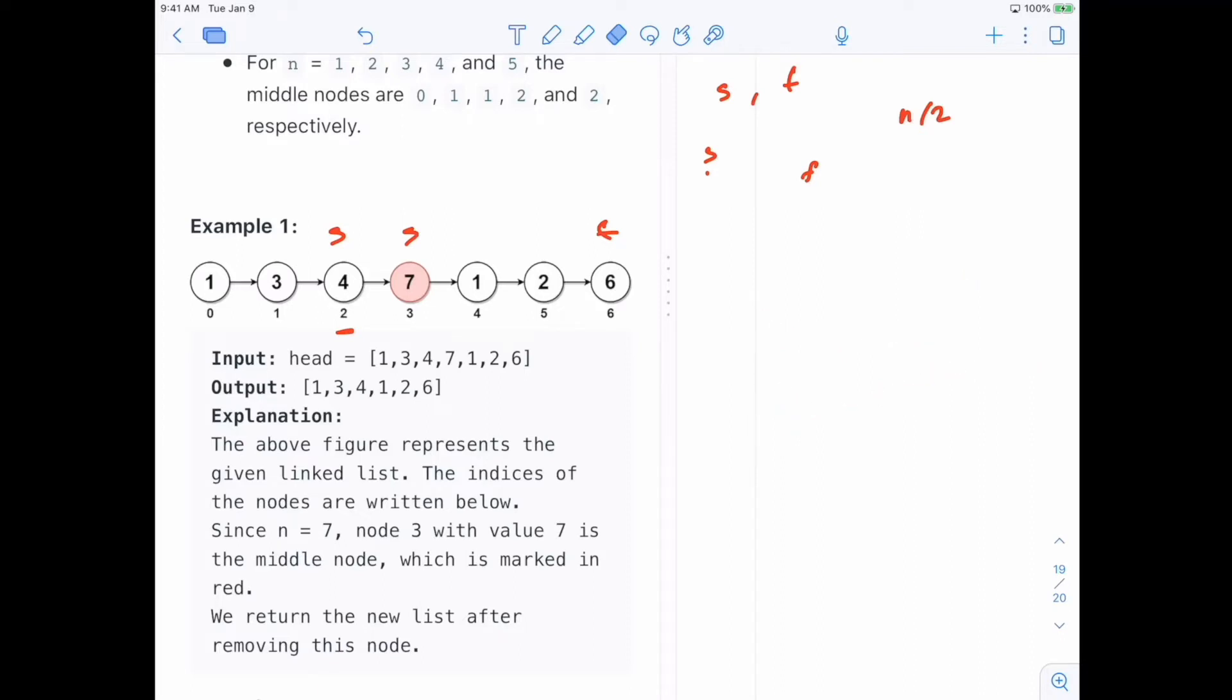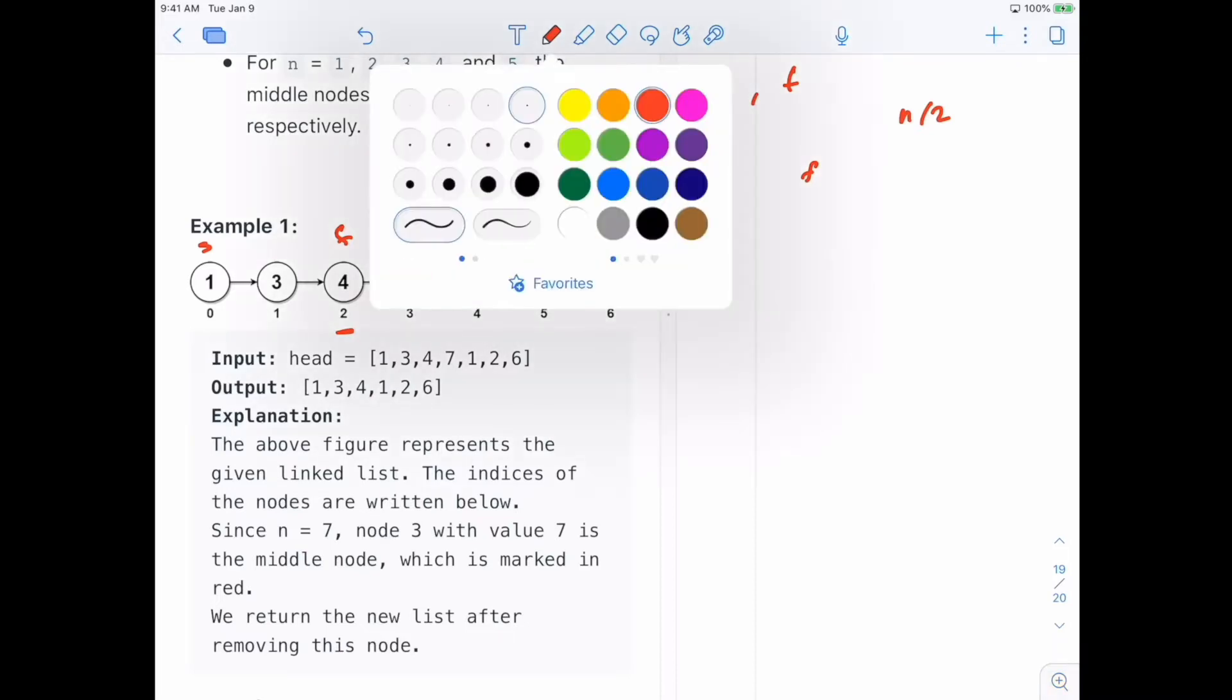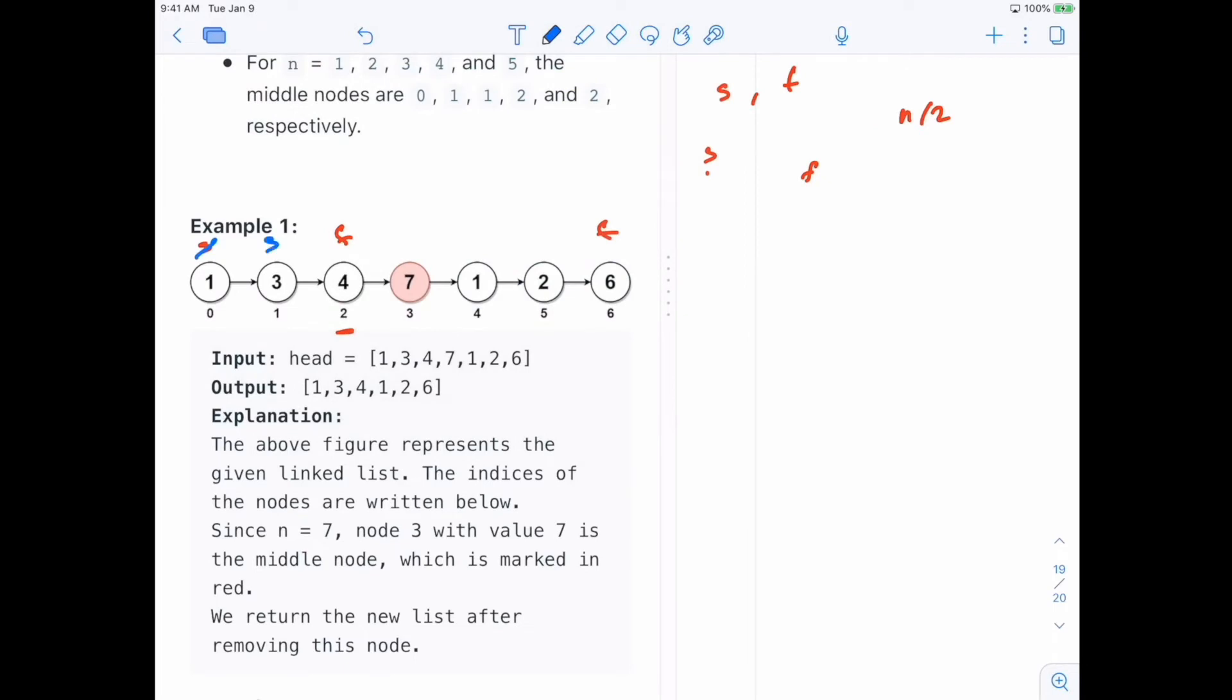Okay, so what do we need to do? First, we want our pointer to be at the start here, and our fast pointer needs to be dot next dot next of the head. Okay, so then we move our slow pointer. So we move our slow pointer once, but we move our f pointer twice. Then we move it once, and we move our f pointer twice. So now we are here.